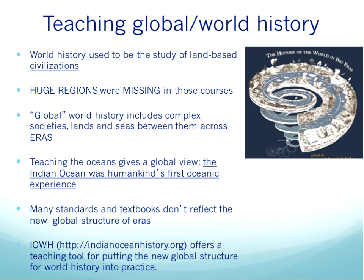History used to be the history of one civilization after another, or as some people put it, one darn thing after another. Many rather culturally imperialistic considerations got into what a civilization was, and geographically speaking, huge regions were missing from these courses. Even just land-based areas, but certainly the seas were not mentioned, especially not until the European age of exploration. So global world history includes complex societies, lands and seas between them, and the structure of these courses is actually eras.